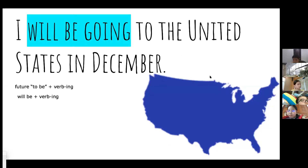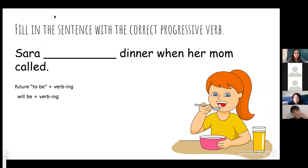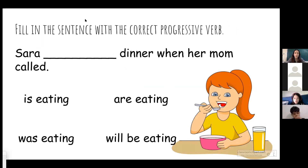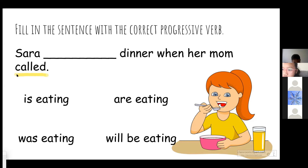Does anyone have any questions? Let's do some more practice. Fill in the sentence with the correct progressive verb: 'Sarah ___ dinner when her mom called.' Look at the verb 'called' — what tense is it? Past tense. So keep that in mind when choosing your other verb. How many Sarahs are we talking about? Just one, so we use 'was eating.' Sarah was eating when her mom called.